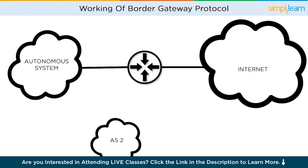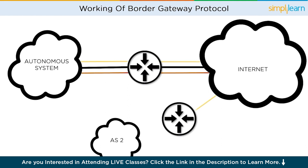The internet consists of numerous autonomous systems, and BGP ensures that packets are properly forwarded between them. When a BGP router connects to a neighboring AS router — known as external BGP — it possesses routing tables containing information about the available paths on the global internet.